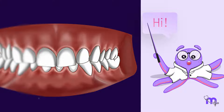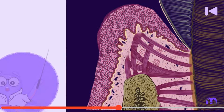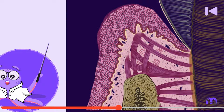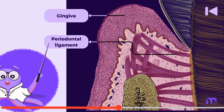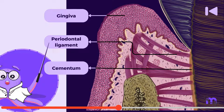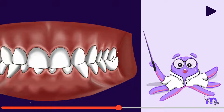Hi! Welcome to the first video of our GENGIVA series. In the previous video, we learned that the periodontium consists of two soft tissue components, namely the GENGIVA and periodontal ligament, and two hard tissue components, namely the CEMENTUM and ALVEOLAR BONE. In this video, we will learn about the GENGIVA.